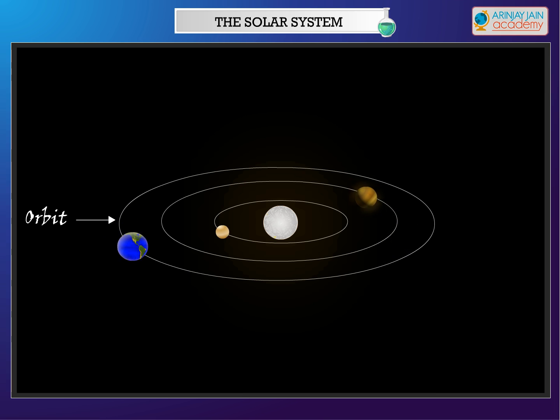Revolution - formation of seasons. Planets go around the sun in a fixed orbit. This movement is called revolution. The Earth takes 365 days and 6 hours to complete one revolution.